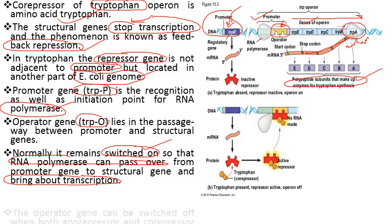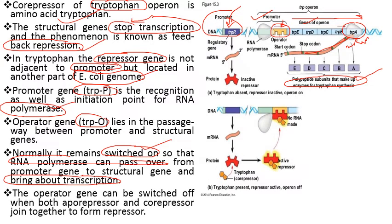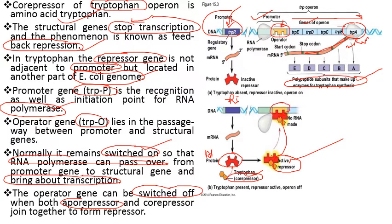The operator gene can be switched off when the apo-repressor — the repressor coded by the regulatory gene — combines with the co-repressor, tryptophan, to form the active repressor. This active repressor binds at the operator site, blocking RNA polymerase from moving from the promoter region to the structural genes region, so there is no transcription — transcription halts, stopping the process entirely.